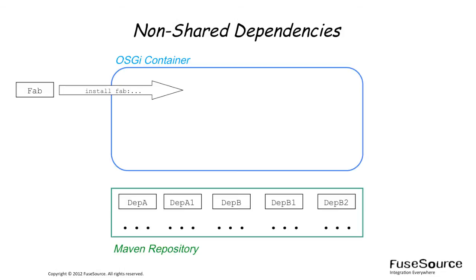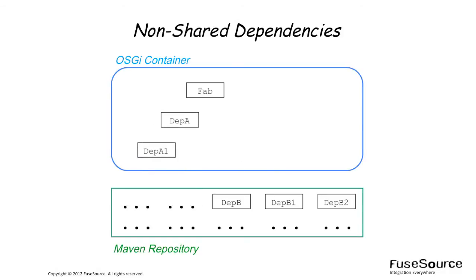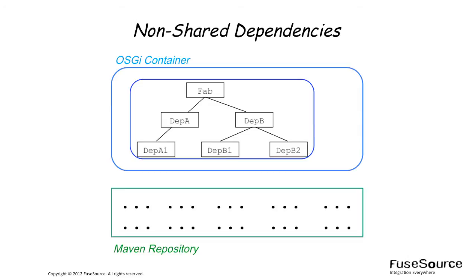Install the FAB using the OSGI install command with the fab: URL prefix. As the FAB is deployed, it works out the dependencies it needs by scanning the FAB's pom.xml file. If the dependencies are not already available in the container, the FAB downloads them from a Maven repository. After all of the dependencies are downloaded, they are packaged into the same OSGI bundle as the FAB JAR.